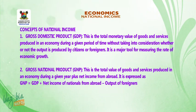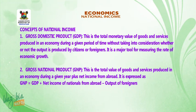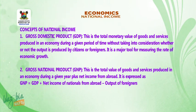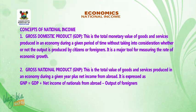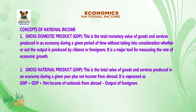2. Gross national product (GNP). This is the total value of goods and services produced in an economy during a given year, plus net income from abroad. It is expressed as: GNP = GDP + net income of nationals from abroad − output of foreigners.